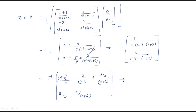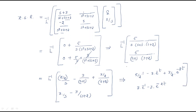Applying the Laplace inverse: 1/s becomes 1, 1/(s+1) becomes e^(-t), and 1/(s+2) becomes e^(-2t). So the zero state response first element is 5/2 - 3·e^(-t) + 3/2·e^(-2t), and the second element is 3·e^(-t) - 3·e^(-2t).